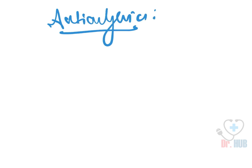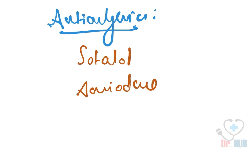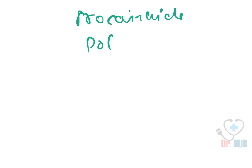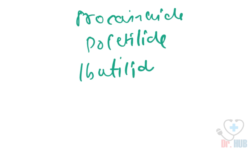The first class is the antiarrhythmics. Antiarrhythmics causing QT prolongation and torsades de pointes include sotalol, amiodarone, quinidine, procainamide, dofetilide, as well as ibutilide.